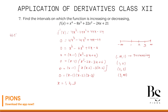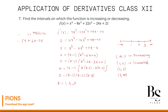For (1, 2), choose x = 1.5: f'(1.5) = 4(3.375) - 24(2.25) + 44(1.5) - 24 = 13.5 - 54 + 66 - 24 = 1.5, which is positive. So the function is increasing on (1, 2). No need to show all detailed calculations in the exam.